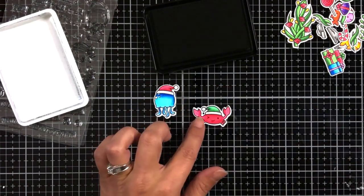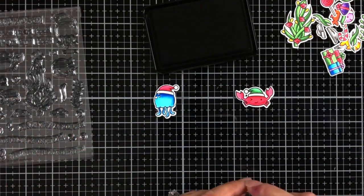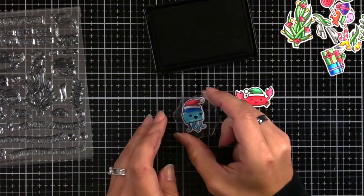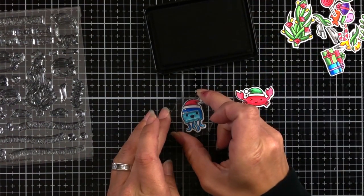Once I had die cut them using the coordinating die, I'm just taking a couple of the smiley faces and stamping them onto the images. Now I'll work on the assembly of my shadow box.